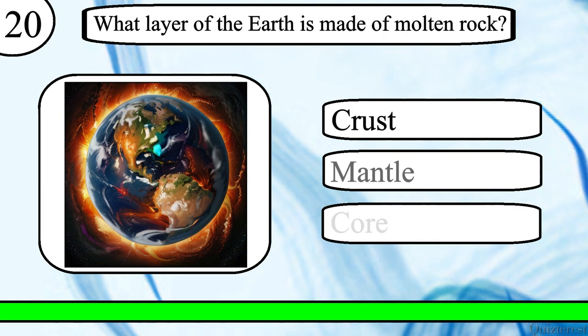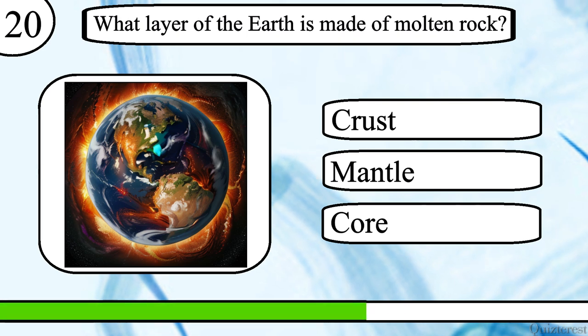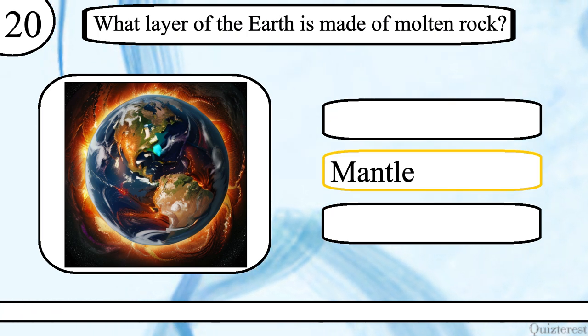Question 20. What layer of the earth is made of molten rock? Crust, mantle or core? The correct answer is mantle.